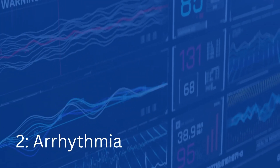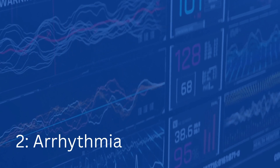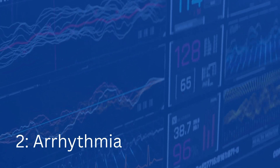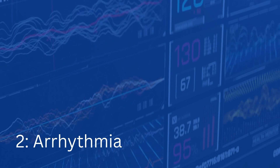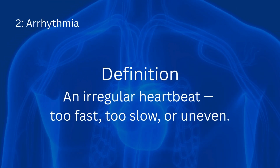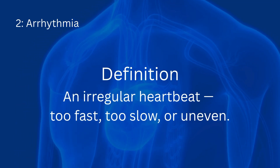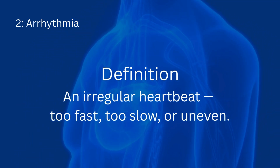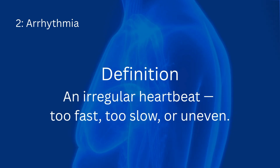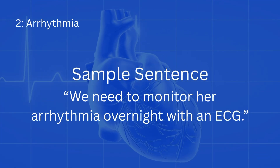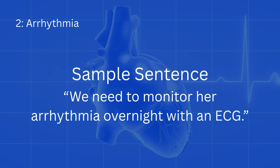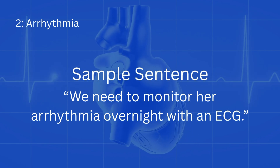Term number two: Arrhythmia. This is an irregular heartbeat — too fast, too slow, or uneven. Sample phrase: We need to monitor her arrhythmia overnight with an ECG.